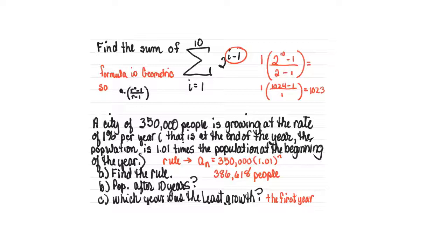A geometric type of word problem would deal with things like people growing at a certain rate. In this case, 1 percent per year. Remember, percent is a type of ratio which lends itself to being geometric. At 1 percent per year, that means at the end of the year the population is 1.01 times the population at the beginning. The rule is 350,000 people, our first term, times our ratio 1.01 to the power of n.